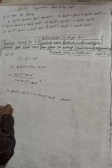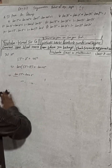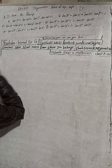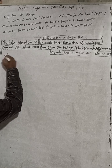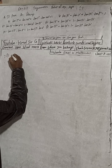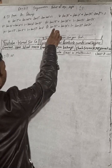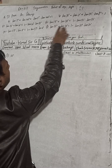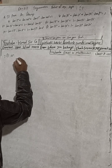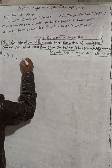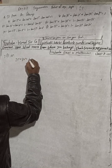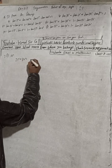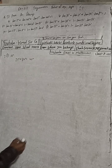Part F: Prove tan25° + tan20° = 1 − tan25°·tan20°. We see 25 + 20 = 45, so 25° + 20° = 45°. Take tan both sides: tan(25° + 20°) = tan45°.